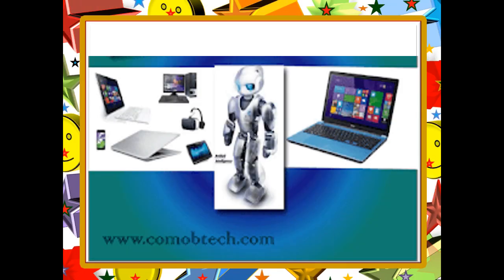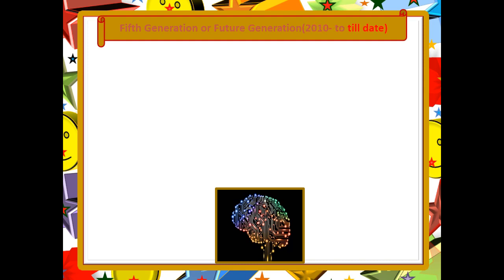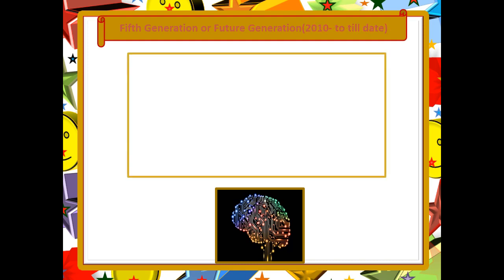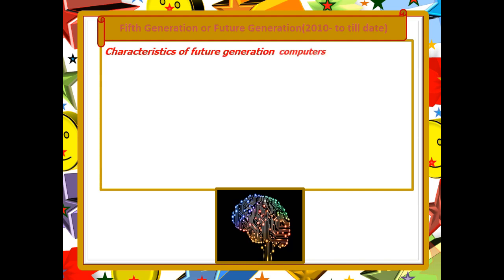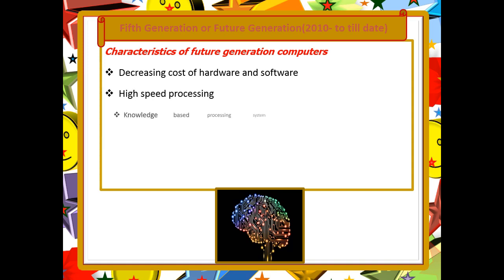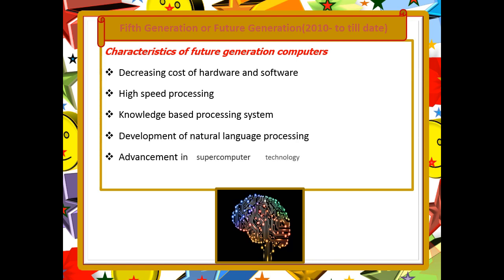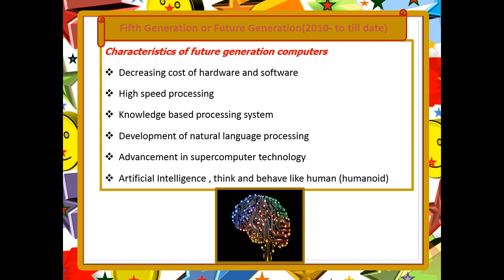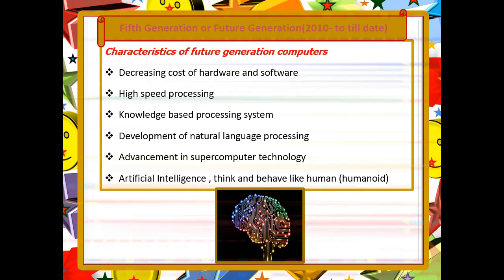The fifth generation computers are represented by robots, starting from the year 2010 to till date, and are still under development. The goals behind this future generation include decreasing the cost of hardware and software, high processing speed, knowledge-based processing, and development of natural language processing — meaning the language that we use. It also involves the use of AI, that is artificial intelligence, enabling machines to think and behave like human beings.